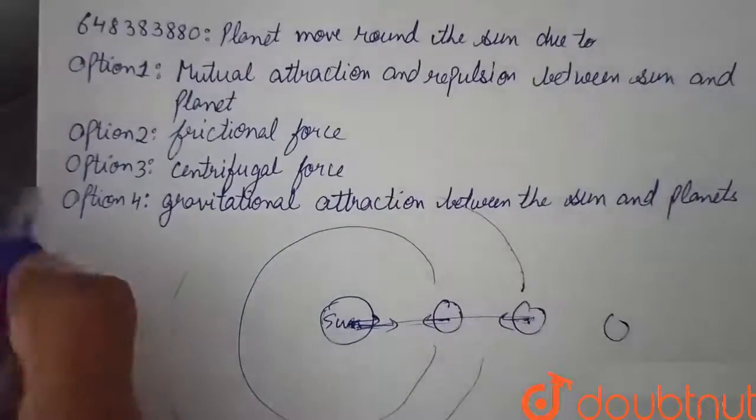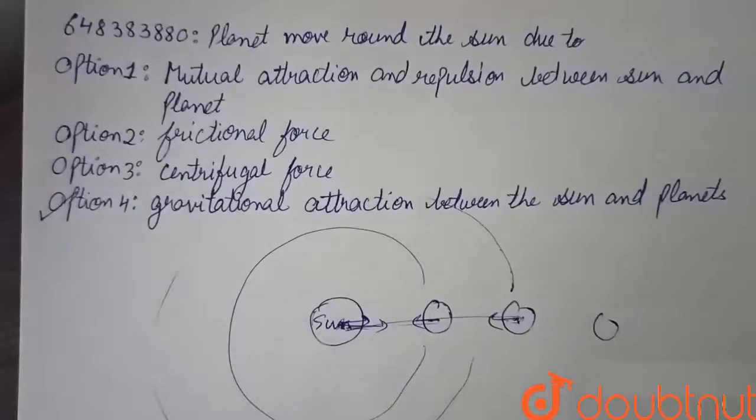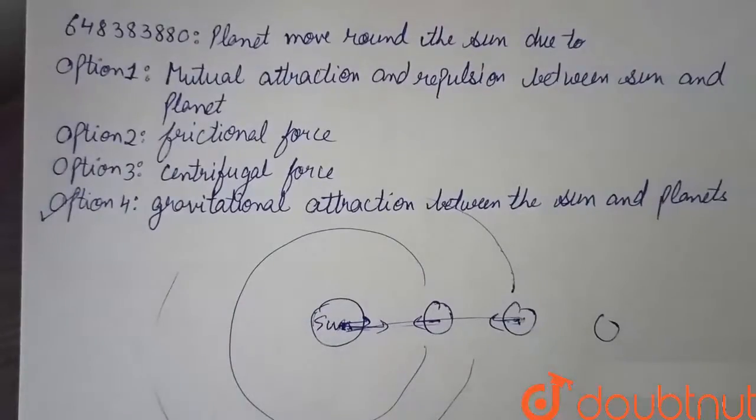This implies option 4 is correct, which states that gravitational attraction between the sun and planets help planets move around the sun.